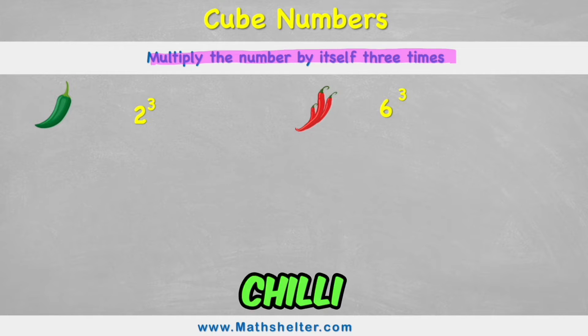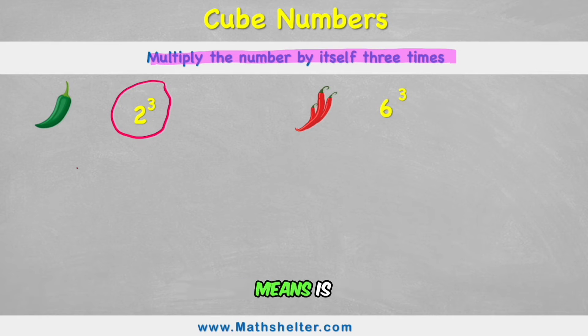So if we look at this green chilli challenge, it says two cubed, or two to the power of three. So what it effectively means is two times two times two.